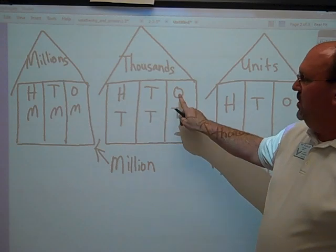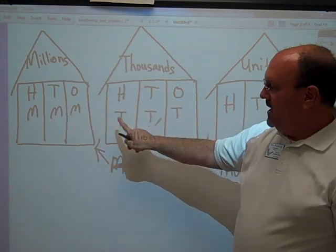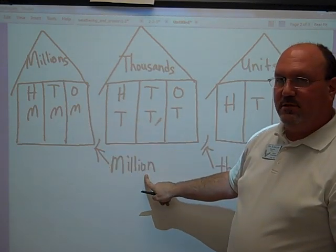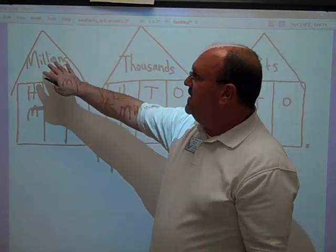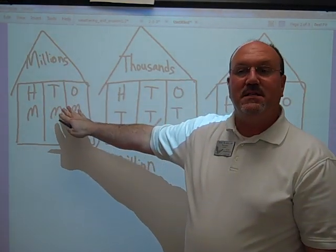Then we have the thousands house: ones, tens, hundreds. And the separator between the thousands and the millions is the comma for the millions. Then there's the millions house with the ones, tens, hundreds. And there's a song that goes like this.